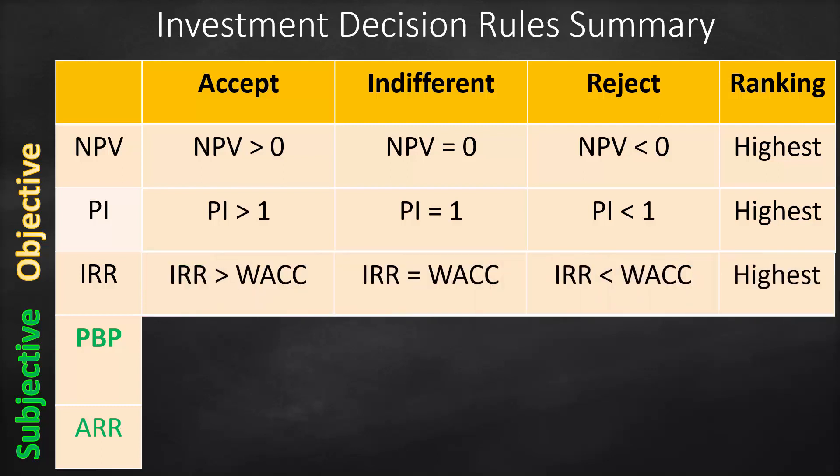For Internal Rate of Return, our benchmark is our discount rate, also called cost of capital or weighted average cost of capital (WACC). If IRR is bigger than WACC, we accept the project. If IRR equals WACC, we are indifferent. If IRR is lower than WACC, we reject the project.